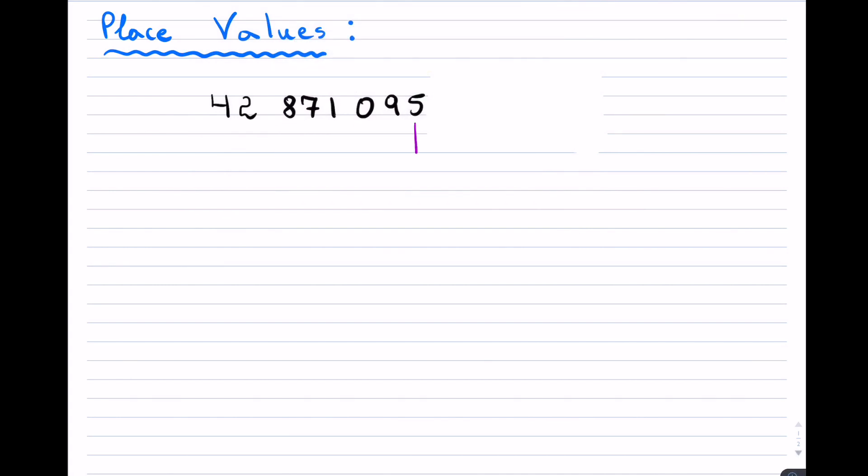We will start with the first one on the right hand side, and that place value of the number 5 right here is known as the ones. Because we do count in ones, the second place value that we have, so this one right here, is known as the tens.